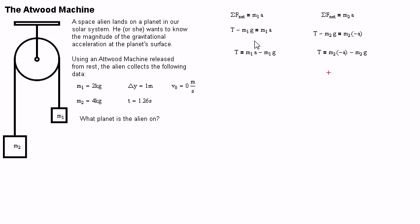Since both equations have a T in them, they can be set equal to each other. M1A minus M1G equals M2 times negative A minus M2G. Solving for G, we see that G is equal to A times the sum of the mass divided by the difference of the mass.